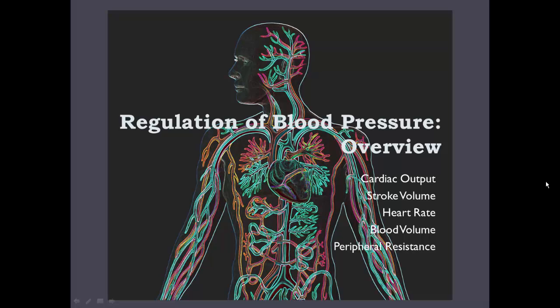Now we're ready to begin our look at regulation of blood pressure. This video we're going to start with an overview of the different things we'll be looking at, and it's going to involve cardiac output, stroke volume, heart rate, blood volume, and peripheral resistance. If those terms aren't familiar to you, or their regulation isn't familiar to you, I would suggest going back and reviewing the videos I've done on those topics, because otherwise the whole idea of how to regulate blood pressure is going to be lost.